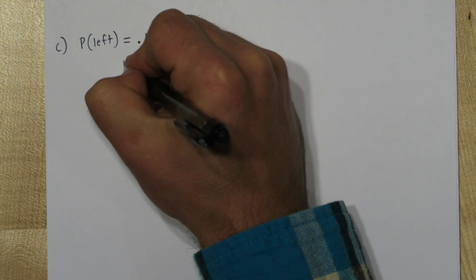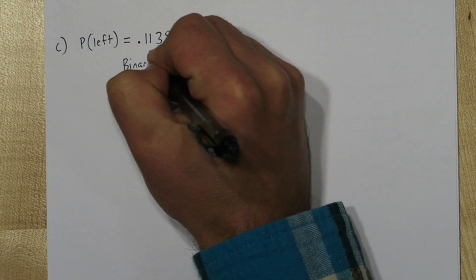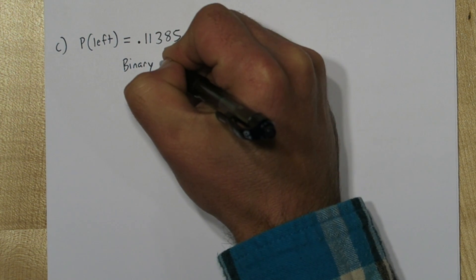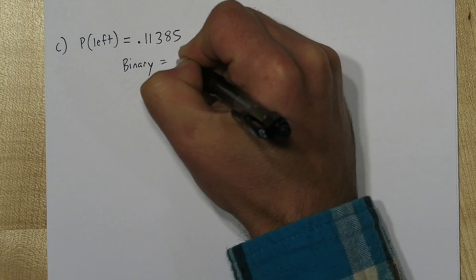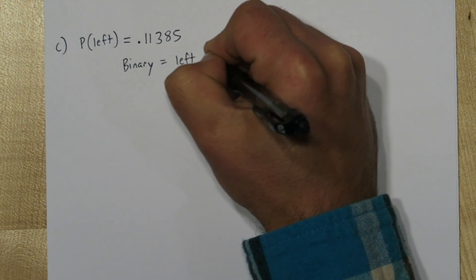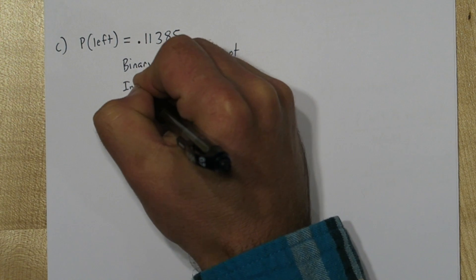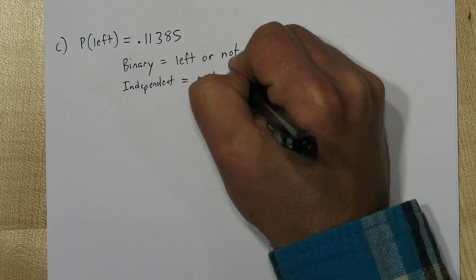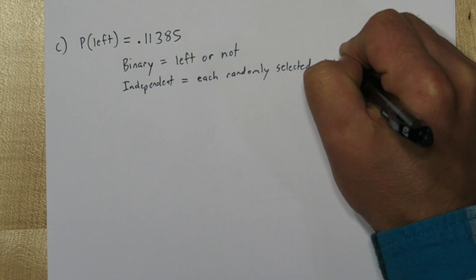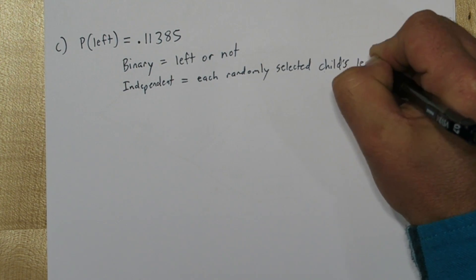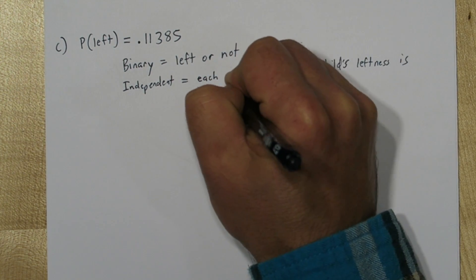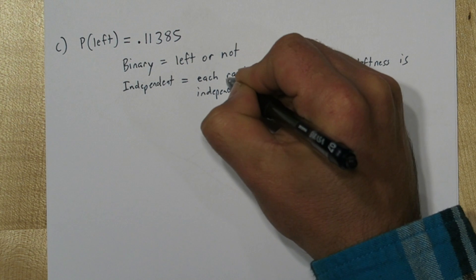Now for part C it actually fits the binomial setting. A helpful acronym for checking this setting is BINS. So first let's see if it's binary. Since each child is left or not there's only two outcomes so it's binary. Next we have to check for independence. Since the children are selected randomly each child's leftness is independent of the other children's leftness selected in the sample.